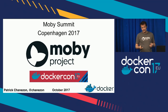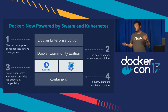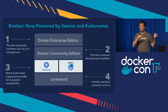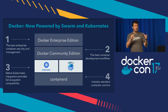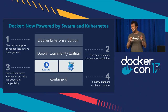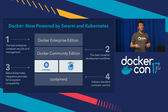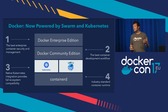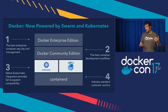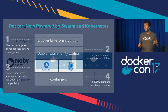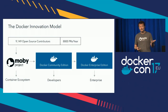First I'll just recap the news from day one, which is that Docker now supports two orchestrators — both Swarm and Kubernetes. For those of you who have been part of the community, many of you would have seen that coming because a lot of that work happened in the open in the Mobi project.